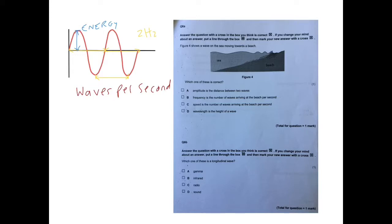So let's read through this. Which one is correct? Amplitude is the distance between 2 waves. No, that's the wavelength. Frequency is the number of waves arriving at the beach per second. We don't need to continue, that's it.